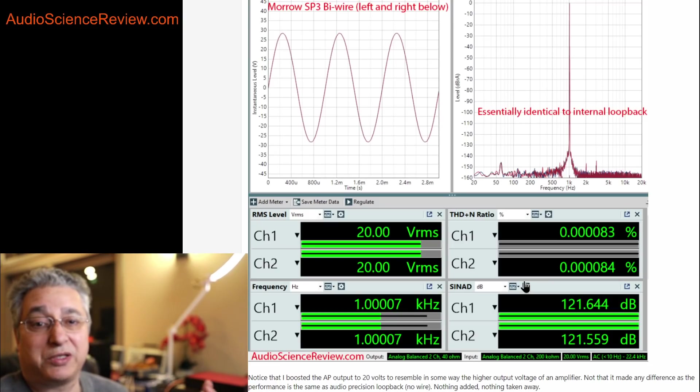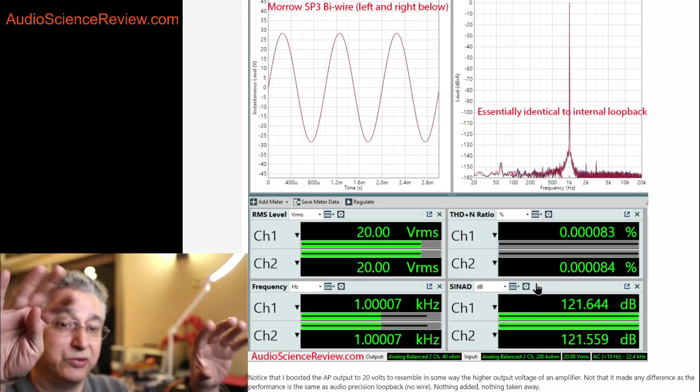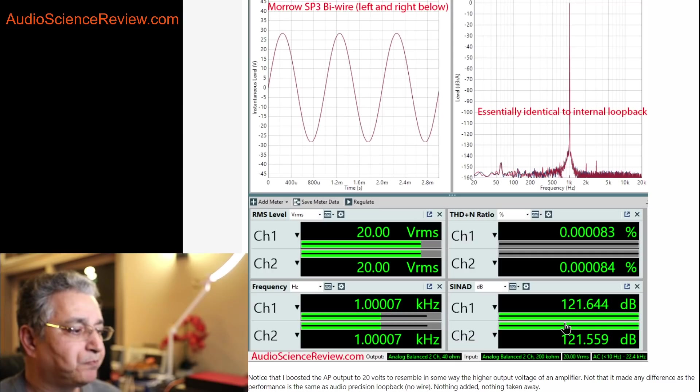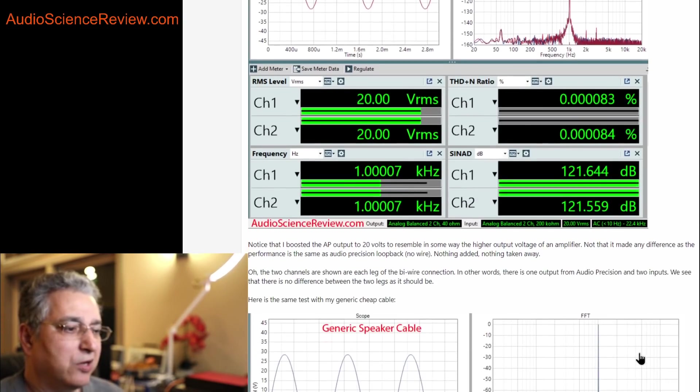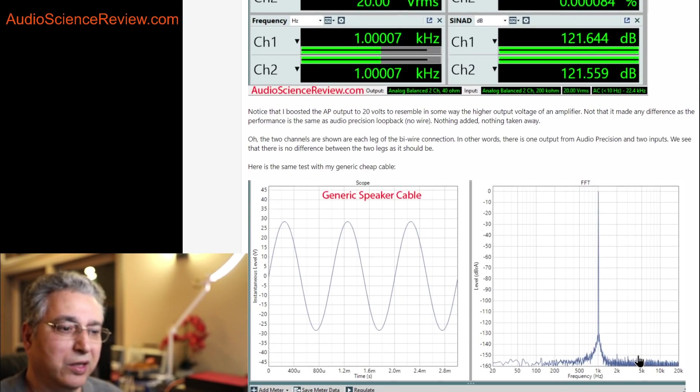So this wire had same performance for good or bad, the same as what the little internal connection is into the analyzer. You see two channels in here, by the way, because I went from one output to two inputs because it's bi-wire and we're measuring both. And we see that it makes no difference that the outputs are separated as it should be. Now, the key is how well this cable does compared to generic cable.